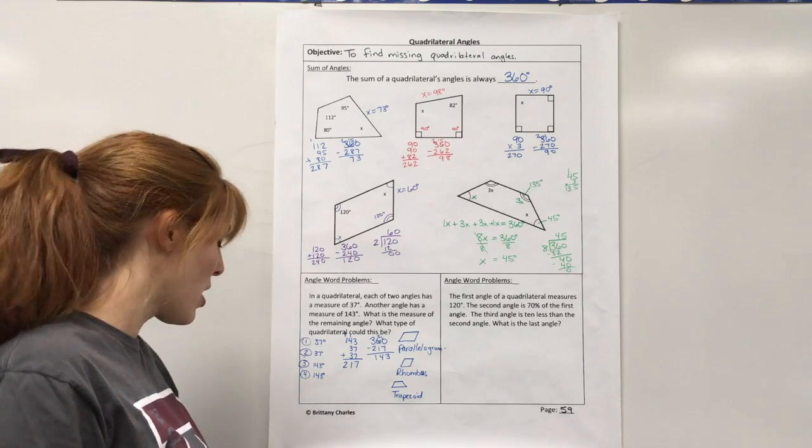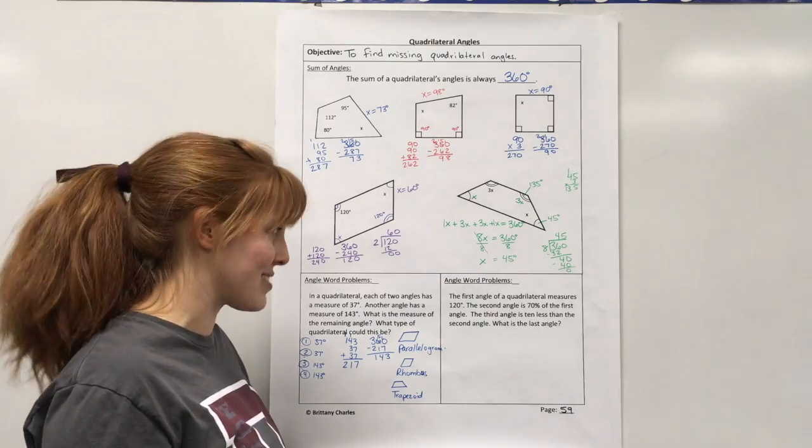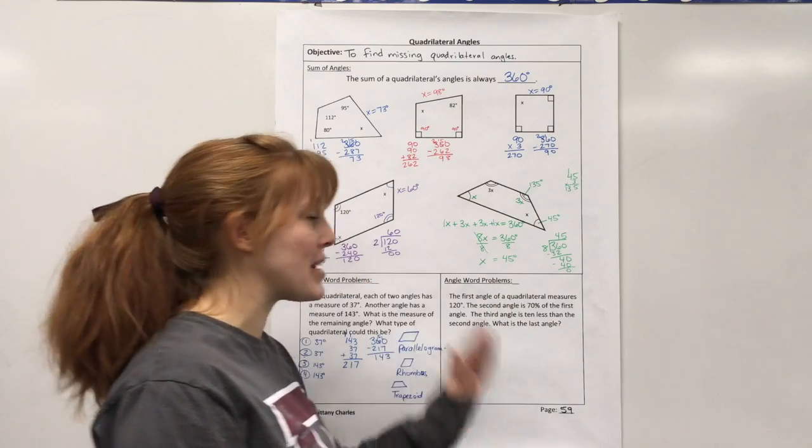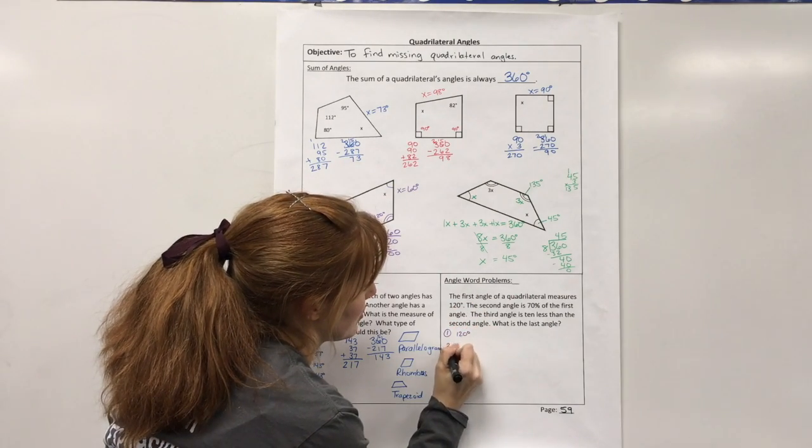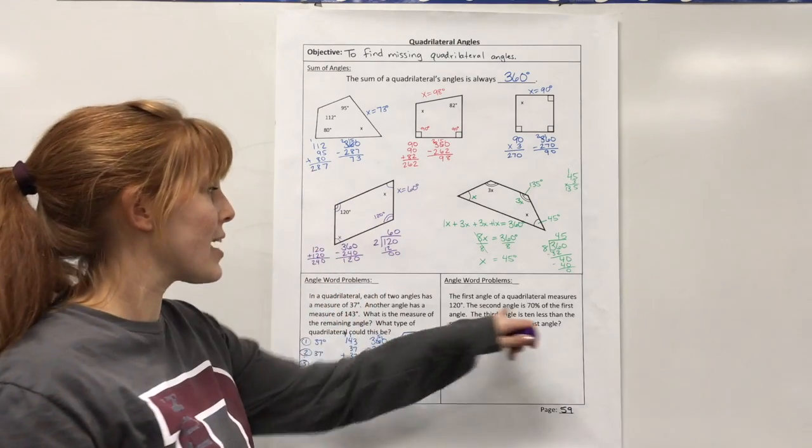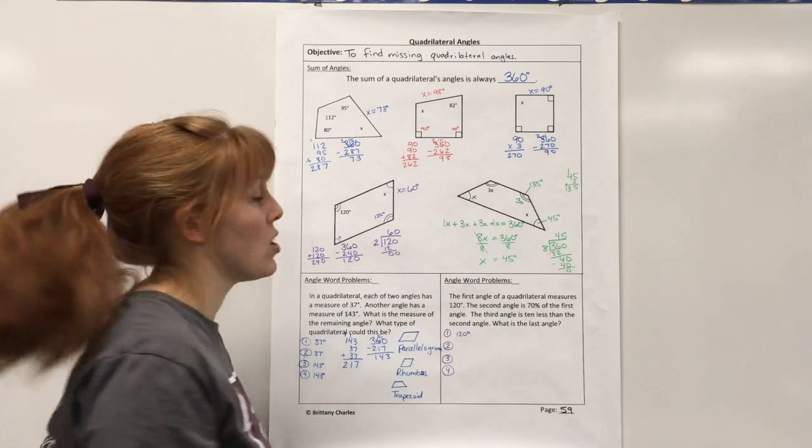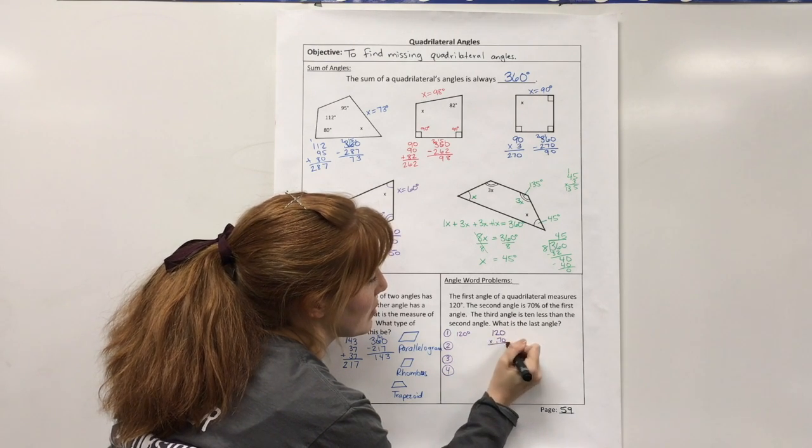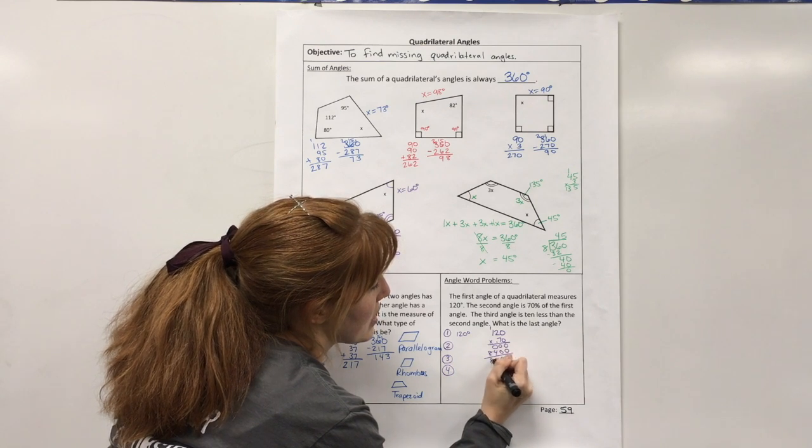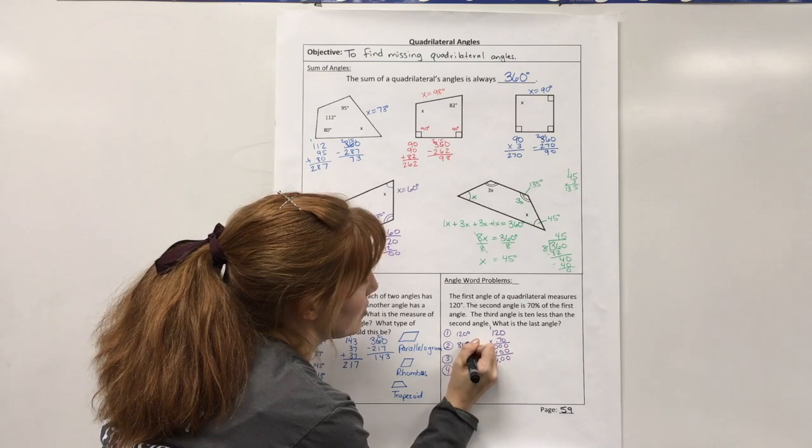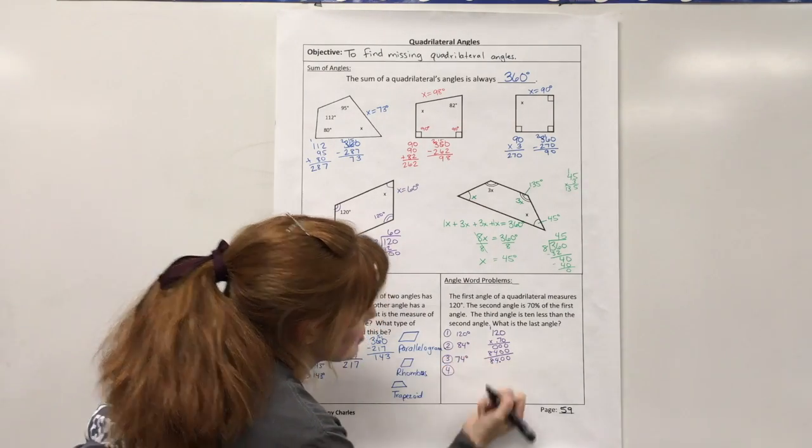The first angle of a quadrilateral measures 120 degrees. The second angle is 70% of the first angle. The third angle is 10 less than the second angle. What is the last angle? That is complicated and there are many steps. So let's start over with the first one. The first angle is 120 degrees. The second angle is 70% of the first angle. So don't put a 70 here. It's 70% of the 120. Well, that's percent of a number. So 120 times 0.70 equals 84. So now I know my second angle is 84 degrees. The third angle is 10 less than the second. So 84 minus 10, that would be 74 degrees.